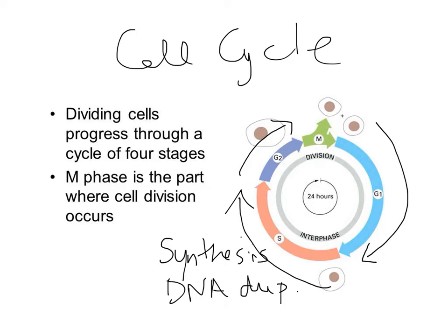Once G2 is complete, a cell will then enter M phase. Depending on the cell type, that will either be mitosis, or it could also be meiosis if it's involved in sperm formation or egg formation. At the end of mitosis, the DNA will be properly divided, and two cells will be generated due to cytokinesis. Ultimately, mitosis will occur first, followed by division of the cytoplasm, which is cytokinesis.